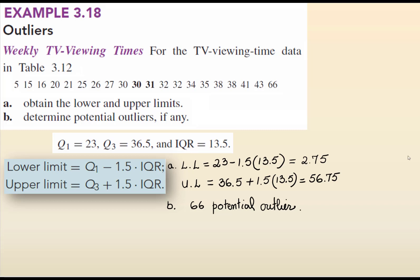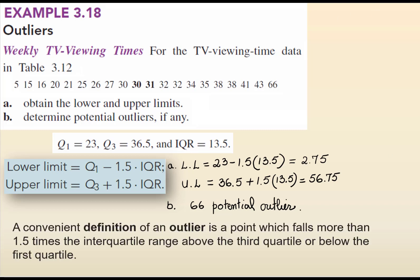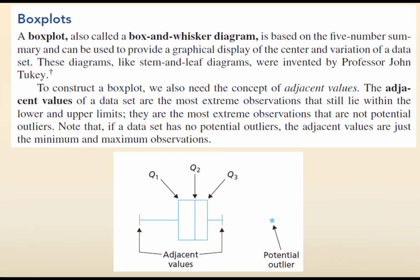A convenient definition for the outlier would be that it is a point which falls more than 1.5 times the interquartile range above the third quartile or below the first quartile.